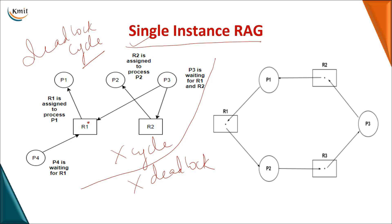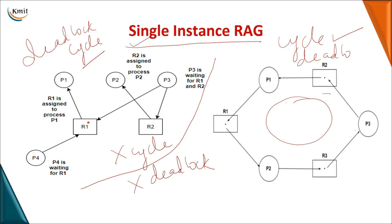In the second single-instance graph, starting with P1: P1 is waiting for R1, R1 is held by P2, P2 is waiting for R3, R3 is held by P3, P3 is waiting for R2, and R2 comes back — so there is a cycle. Since there is a cycle in a single-instance graph, there is a deadlock. In single instance: no cycle means no deadlock; a cycle means compulsory deadlock.